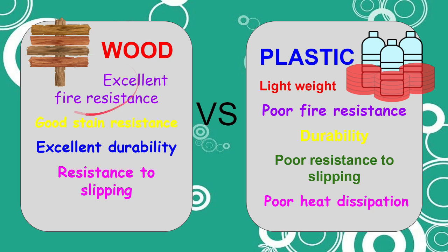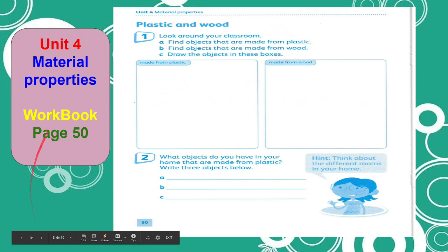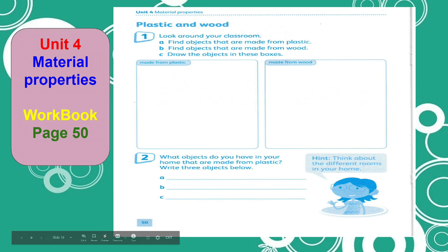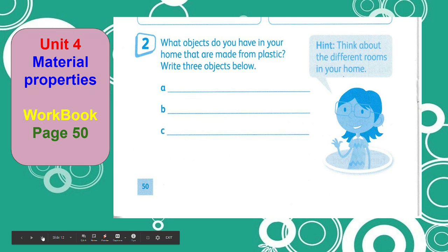Now let's complete our workbook page 50. You are going to find objects that are made from wood, then you will draw here. We know that paper comes from trees and that wood has different textures. It can be smooth, rough, and bumpy. But are all the textures the same?